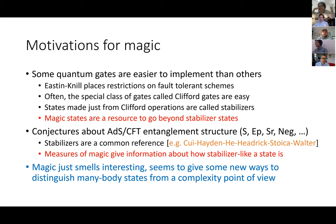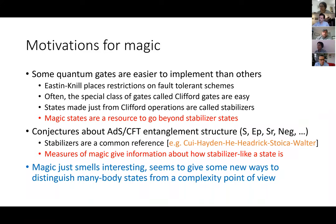If you're interested in simulating quantum field theories or simulating lattice models, it's interesting to ask about how much magic is required to do that simulation. Another motivation comes from AdS/CFT, where we're familiar with all these different conjectures of varying degrees of rigor about the entanglement structure: S stands for entropy, EP is entanglement purification, SR is reflected entropy, negativity is neg, etc. These are all measures you can compute in holography or at least conjecture formulas for. You want to encapsulate what you learn in some kind of effective model of the entanglement, and stabilizer states have been a common reference in the literature for this kind of thing.